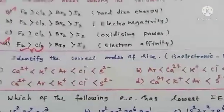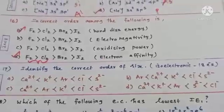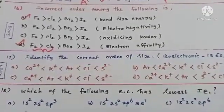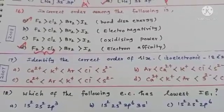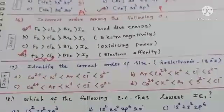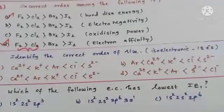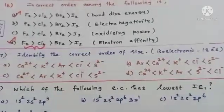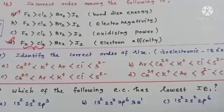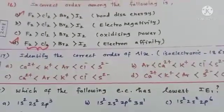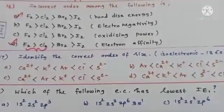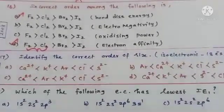Question 17: identify the correct order of size of the following isoelectronic species. We need to arrange Ca²⁺, K⁺, Ar, Cl⁻, and S²⁻ in the correct order of size. These are isoelectronic — all have 18 electrons each — and the correct order of size can be predicted based on proton-electron attraction.